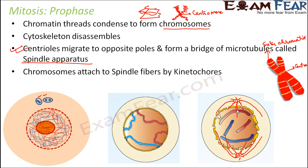Chromosomes attach to the spindle apparatus by kinetochores. The centromere is the central structure of the chromosome, and over the centromere there are hook-like structures known as kinetochores. Each chromosome gets attached to the spindle fibers at its kinetochore, so the kinetochores act like hooks to connect chromosomes to the spindle fibers.